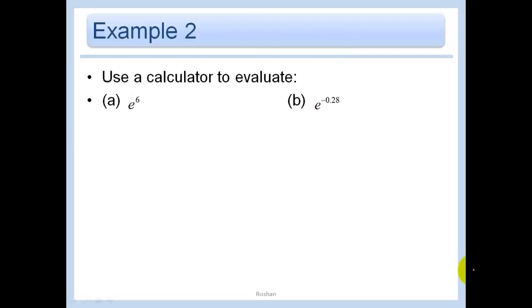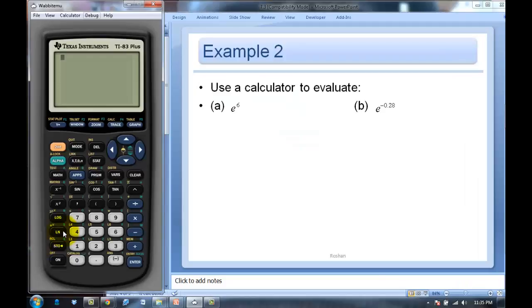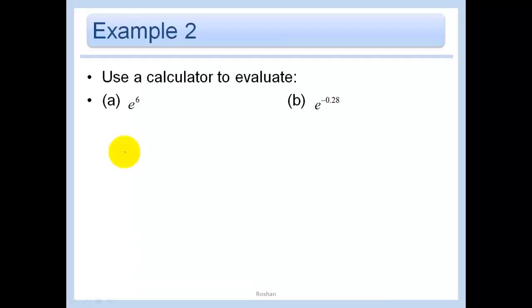When I ask you to use your calculator to evaluate, go to your calculator. The e button you're going to want to use is right here on top of the ln key. So you just do second e to the sixth power. Then we'll do the same thing for b, e to the -0.28. We got 403.429 for this one and 0.756 for this one. Since this is equivalent to 1/e^0.28, you would expect the answer to be something less than e.